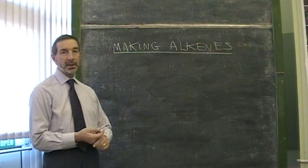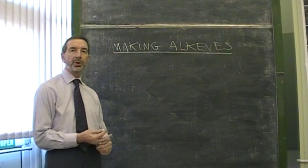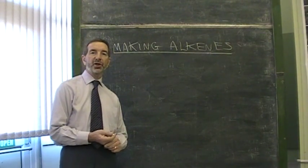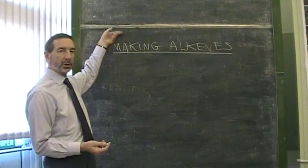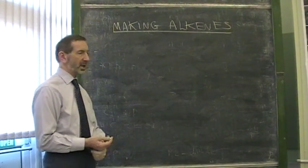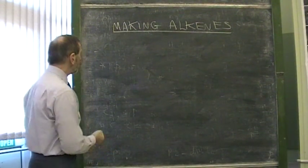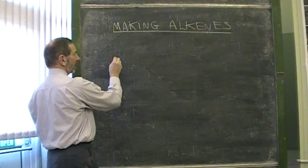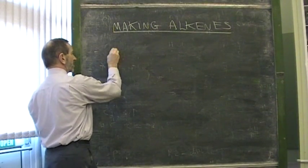Making alkenes. Alkenes are important substances. Their principal use is in the manufacture of addition polymers. So it's important to have a method for manufacturing these substances. Now there are two basic ways in which this can be done. So when it comes to making alkenes, two methods.